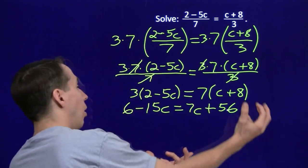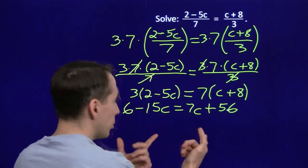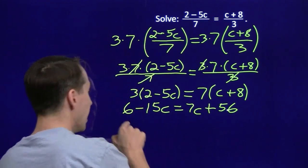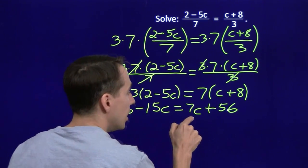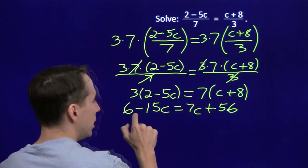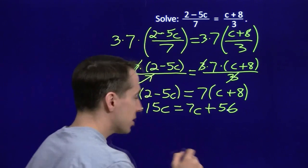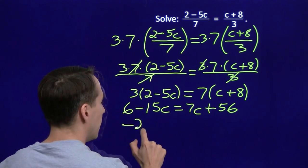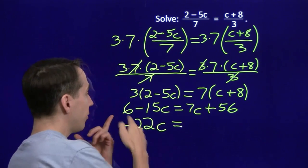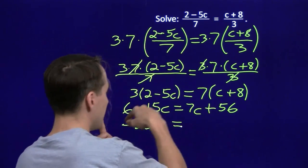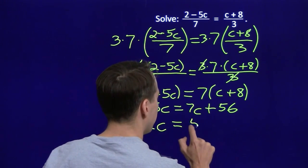Now once again we're going to bring all the terms with variables to one side. We're going to subtract 7c from both sides and we're going to move all the constant terms to the other. We're going to subtract 6 from both sides. So when we subtract 7c over here, minus 15c minus 7c, that'll give us minus 22c. And I subtract the 6 off, that cancels this 6. 56 minus 6 is 50.